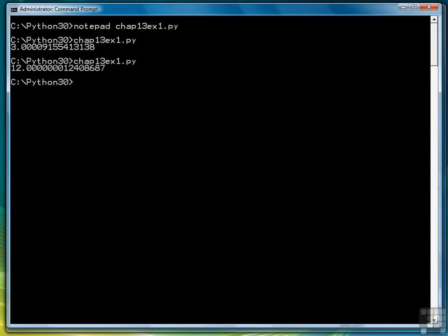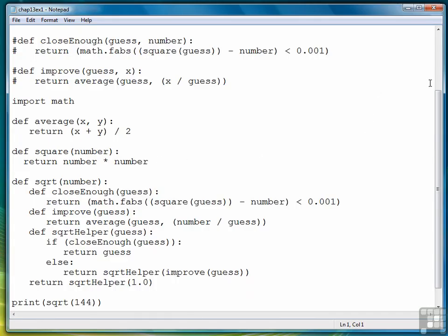By nesting functions, we get a more efficient and maintainable definition of how to determine the square root of a number using Newton's method. The functions that aren't general enough to be used in other instances—close enough, improve, and square root helper—get defined within square root, so someone looking at the program doesn't have to look far to figure out what these functions do.